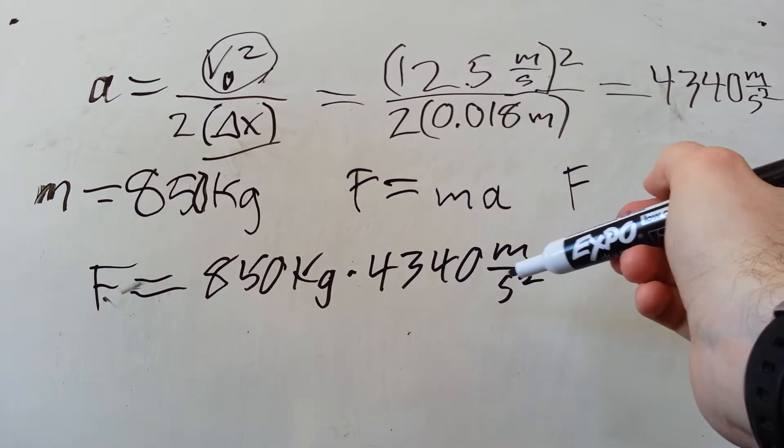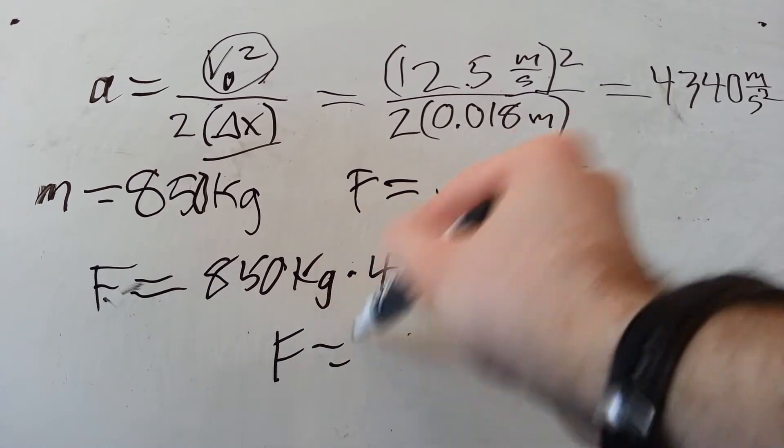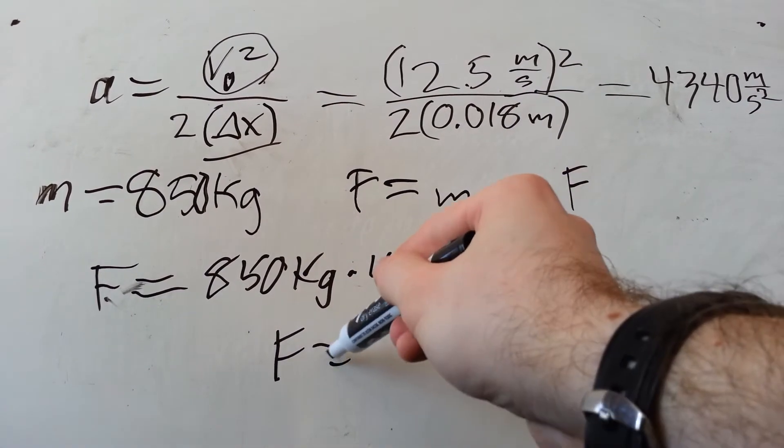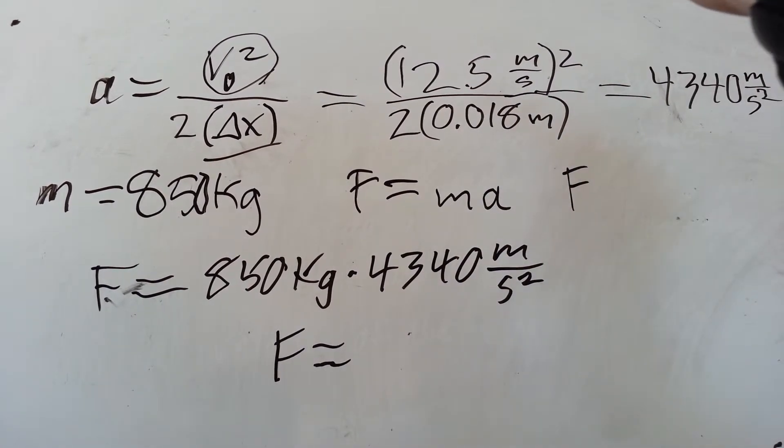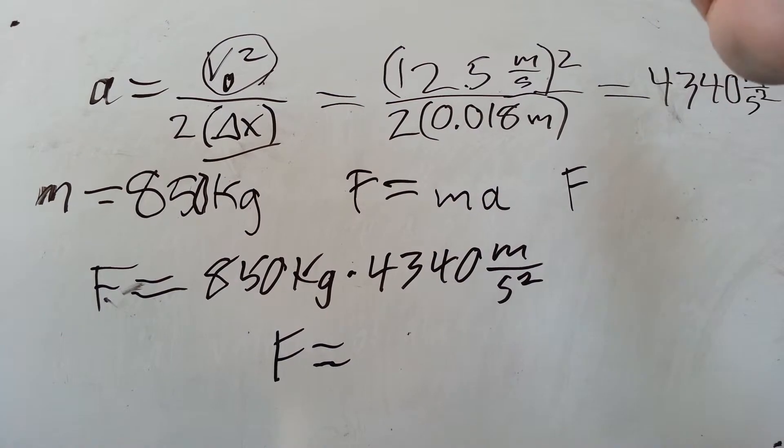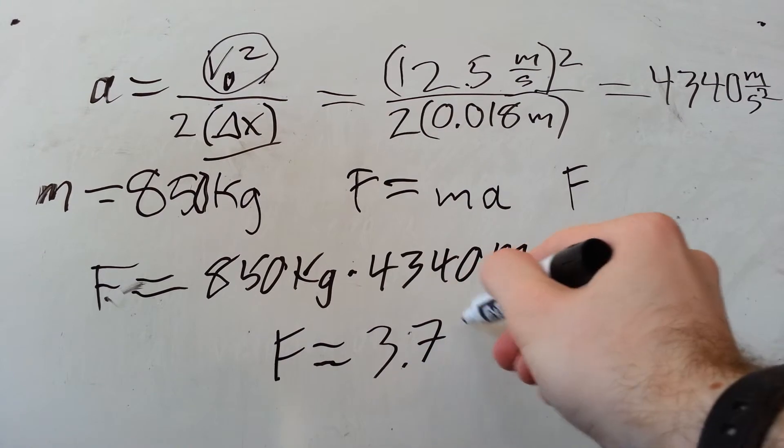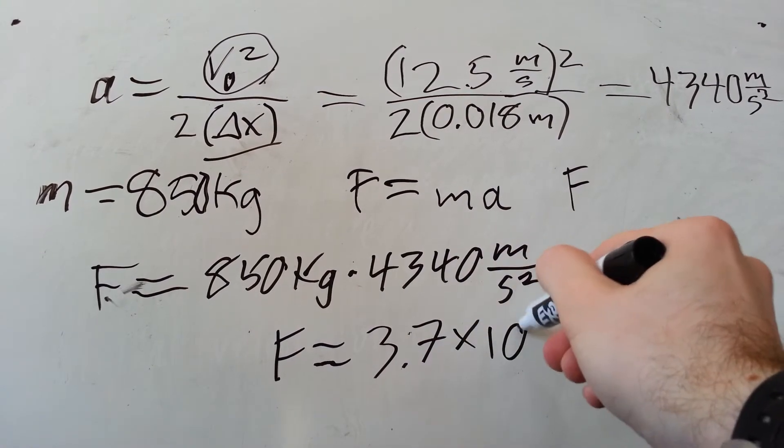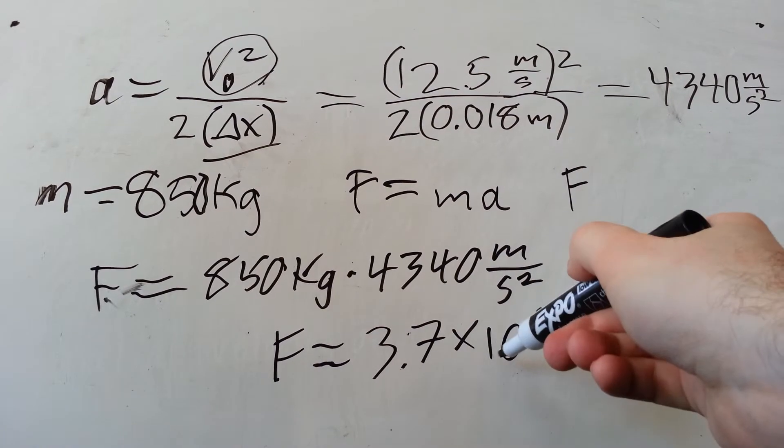Which, as you would guess, is going to be a lot of force. Because it's a car stopping on a dime. It takes a lot of force to slow down a car that fast. And it's equal to about 3.7 times 10 to the sixth Newtons. That's a lot.